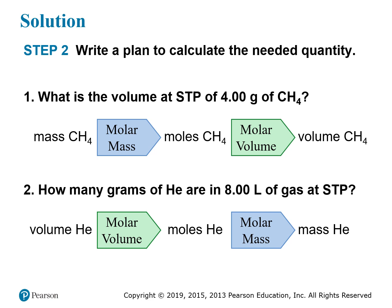Step two is to write a plan. For the first problem, we're given the mass of methane and want the volume. We can't go directly from mass to volume, but at STP we can go from moles to volume. So the path is: mass of methane → moles of methane (using molar mass) → volume of methane (using molar volume). For the second problem, it's the reverse: starting from volume, we use the molar volume to get moles, then the molar mass to get mass.